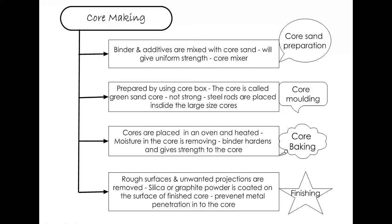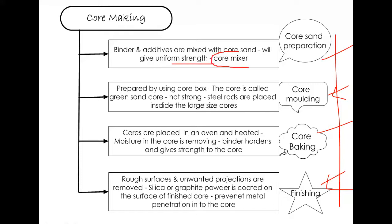The core is produced in four stages: core sand preparation, core molding, core baking, and finishing. In core sand preparation, binders and additives are mixed with the core sand in a core mixer to give a uniform mixture — similar to how mold sand is prepared — to improve the properties of that particular core sand.